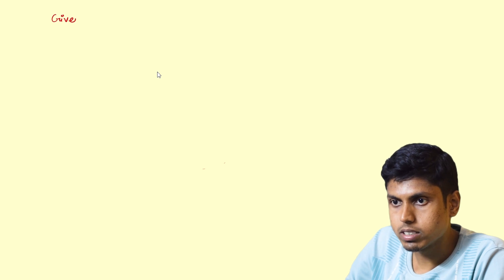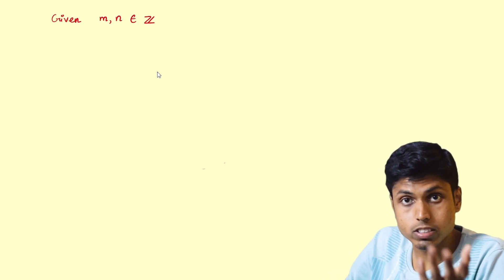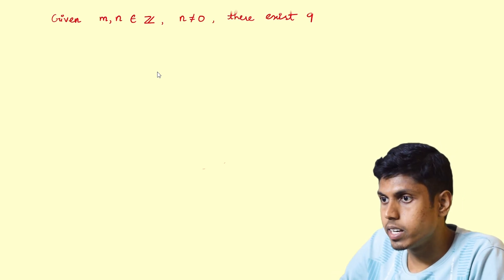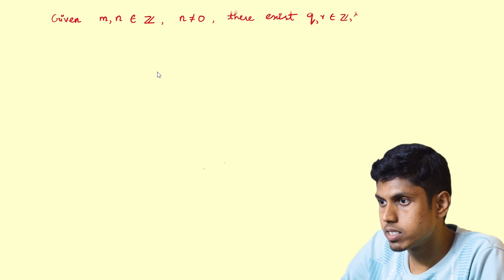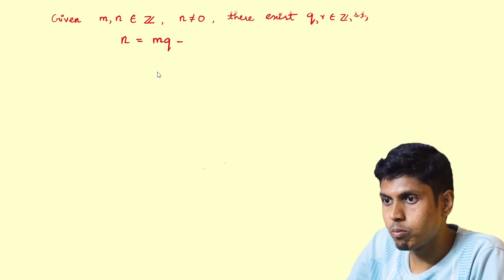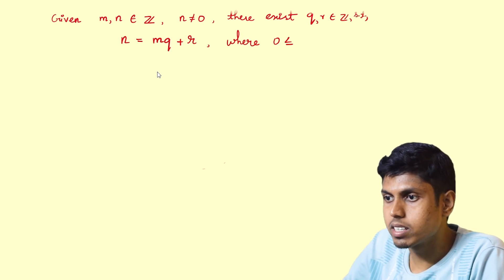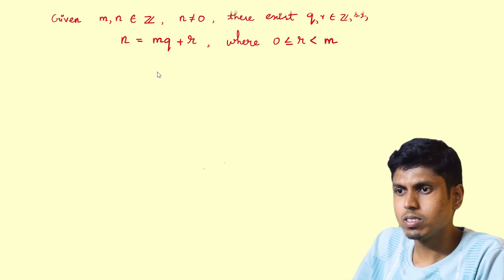Before going into the Euclidean algorithm, let's see what is division algorithm. Given two integers m and n where n is non-zero, there exist integers q and r such that n equals mq plus r, where r is greater than or equal to zero and less than m.